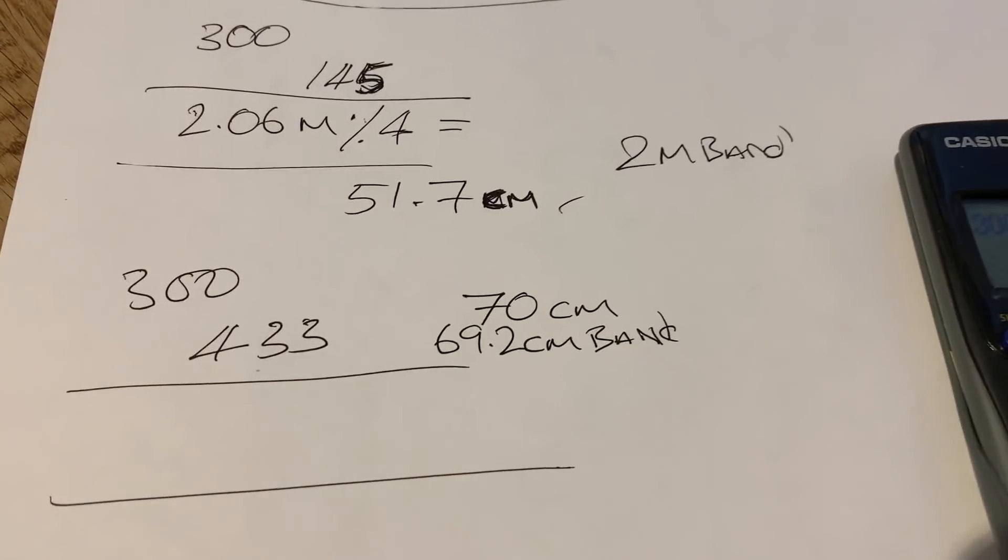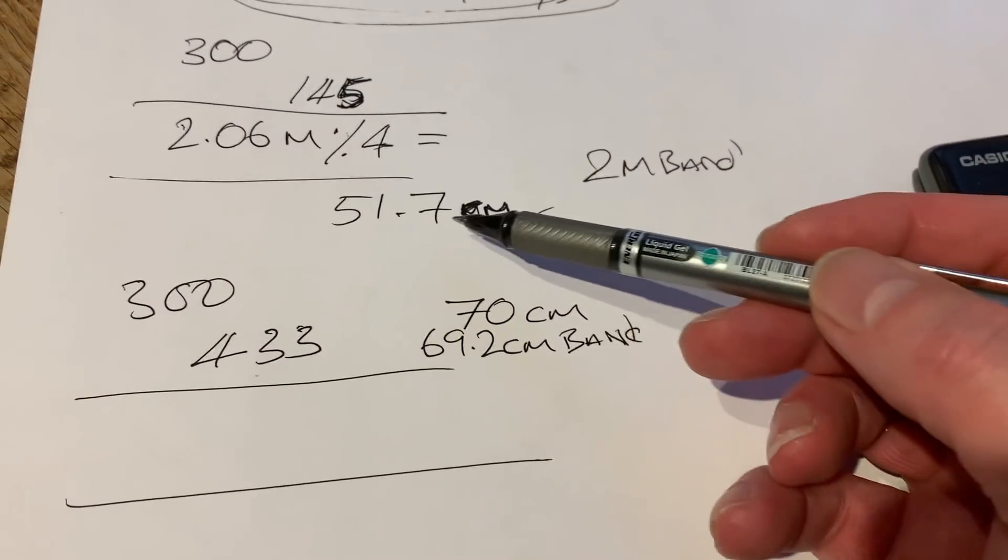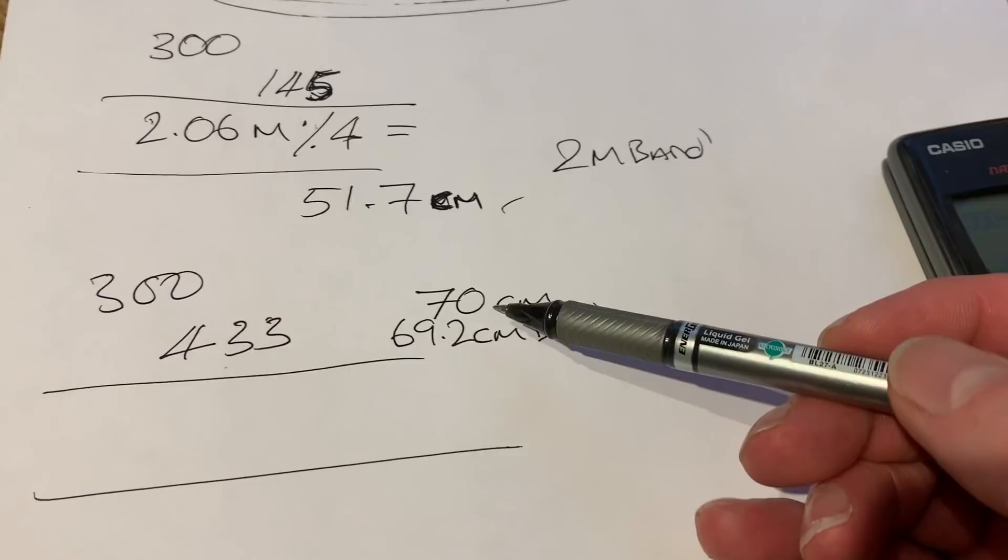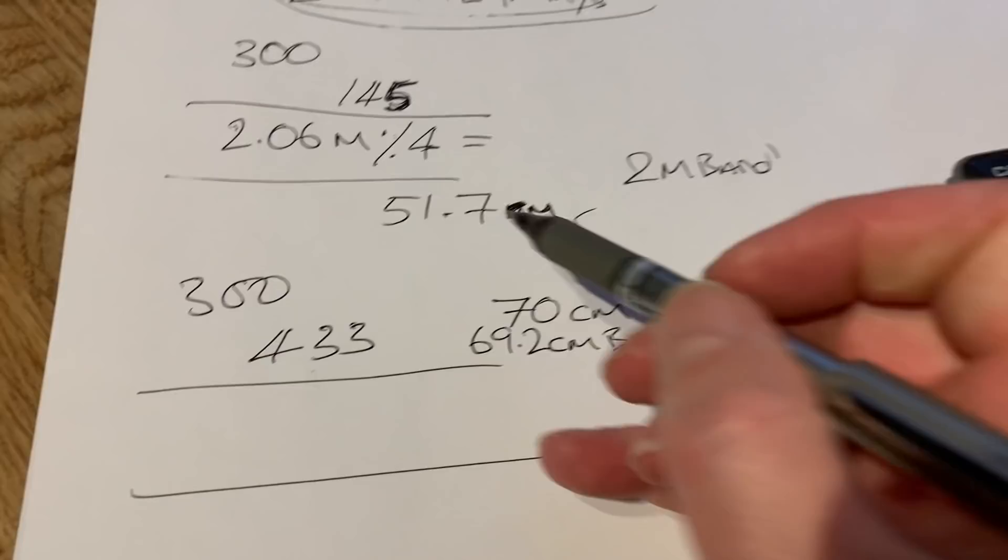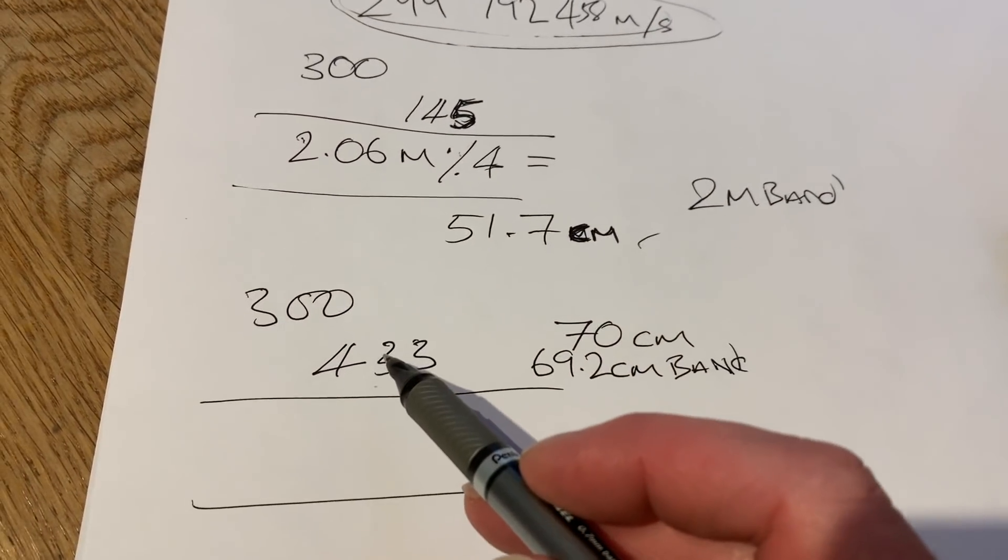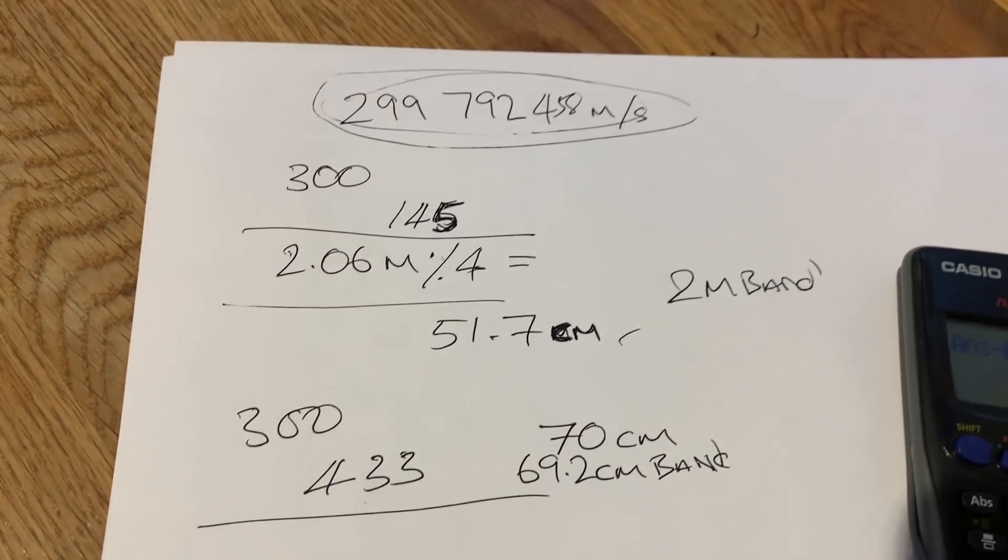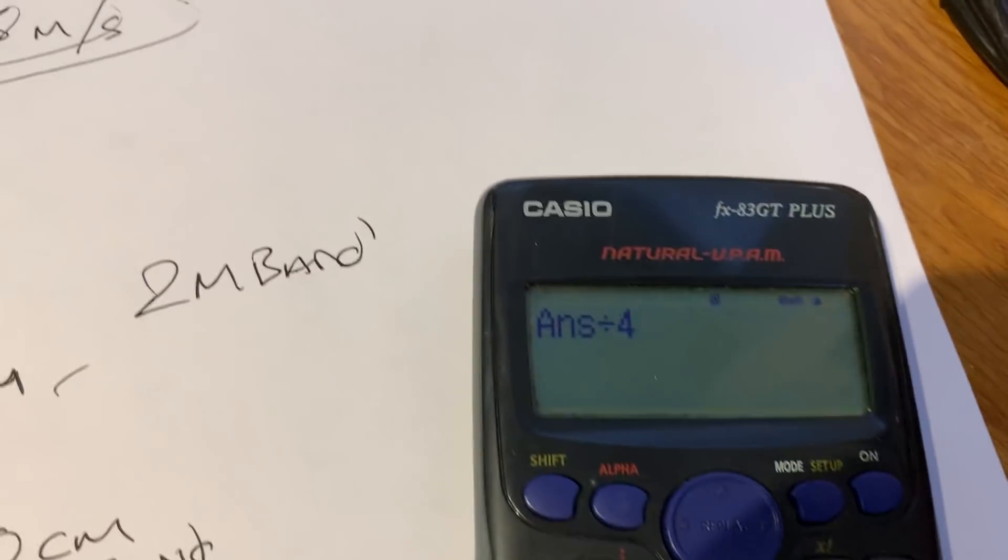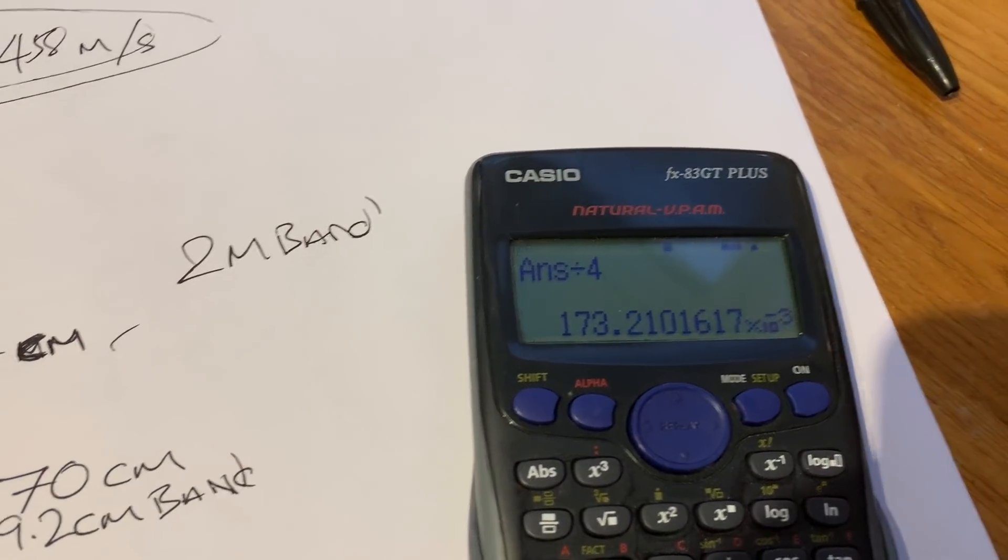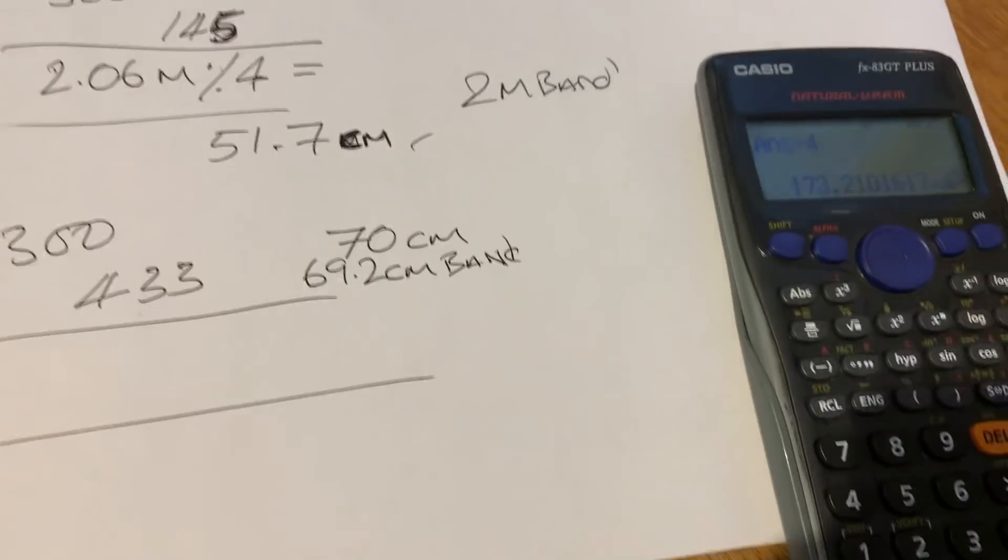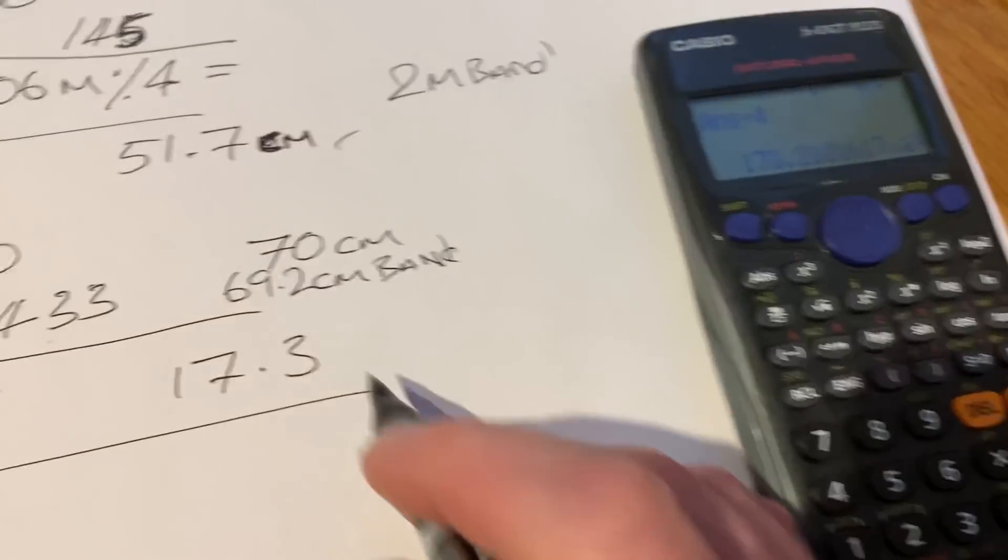But of course we round it up to 70 centimeters. So what's the quarter wave of this 69.2? Let's divide that by four, and that gives us 17.3 centimeters or 173 millimeters.